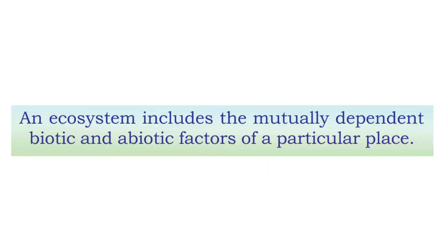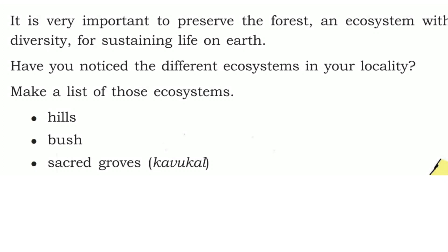Next is the ecosystem. An ecosystem is a particular place that includes mutually dependent biotic and abiotic factors. The forest is the widest and biggest ecosystem. It is very important to preserve the forest, because forests contain many different types of plants and animals — that is, many biotic and abiotic factors.